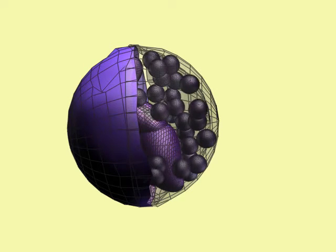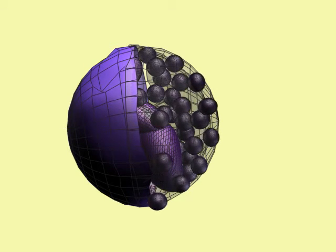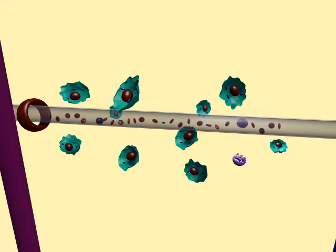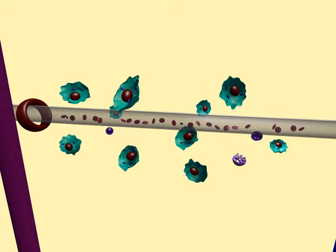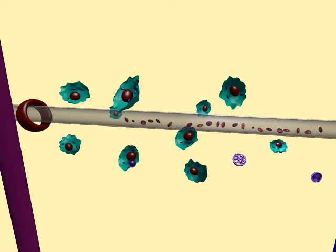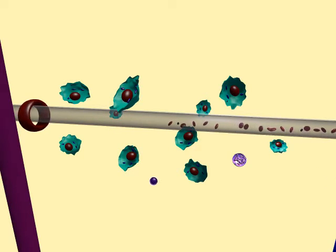When basophils degranulate, they release histamine, a vasodilator, which brings more blood flow to an injured area and increases how permeable capillaries are to white blood cells and certain proteins, which can aid in the immune response.